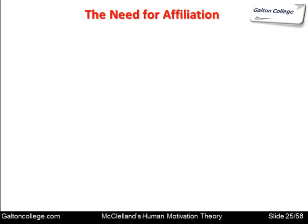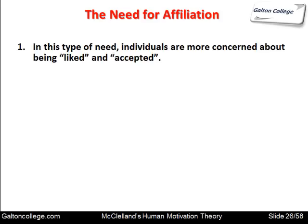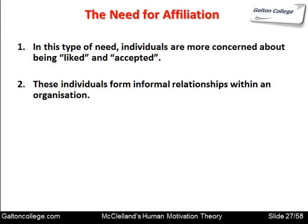The second need is the need for affiliation. Individuals with this need are more concerned about being liked and accepted — they're worried about their image. They form informal relationships within the organisation. While formal groupings are determined by function — production, marketing, accounting — people who have a need for affiliation will seek out friends wherever they can. They want to be liked and accepted.